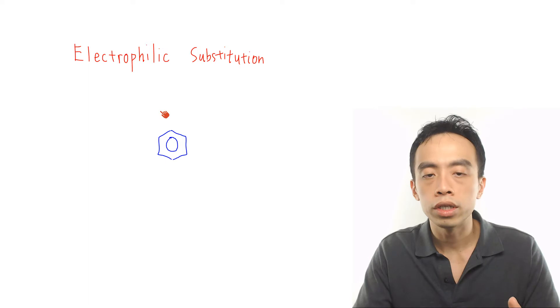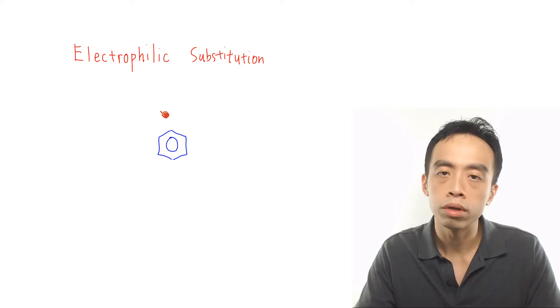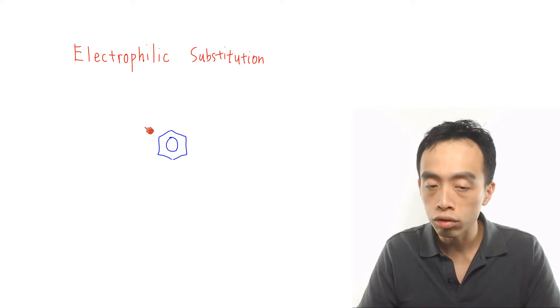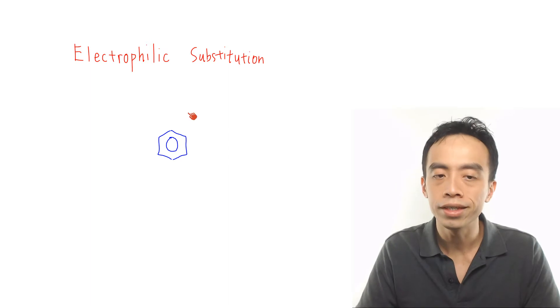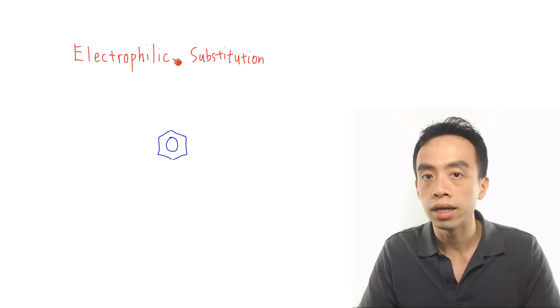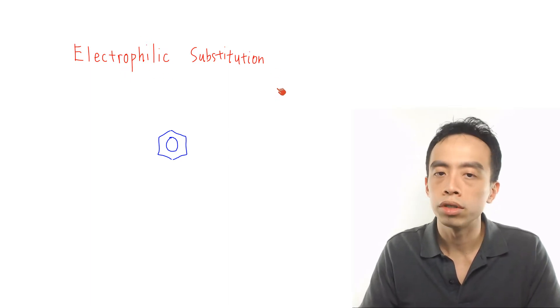Hi everyone, this is Marek Poua, the chemistry guru. In this video, we want to go through the step-by-step description of the electrophilic substitution mechanism of benzene. Before we describe the mechanism proper, we want to go through again, based on the functional group benzene, why does it undergo electrophilic substitution reaction?